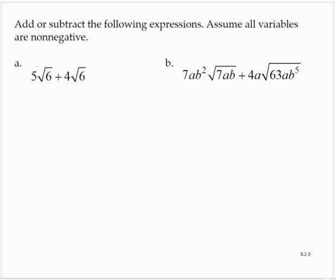These are called like radical terms, or simply like radicals. They both contain square roots of 6, so they can be combined just as if we were combining like terms. So 5 times the square root of 6 plus 4 times the square root of 6 is 9 times the square root of 6.